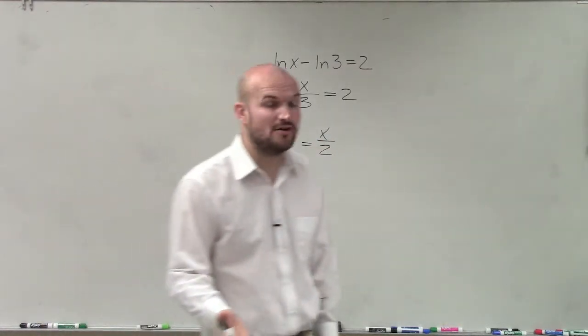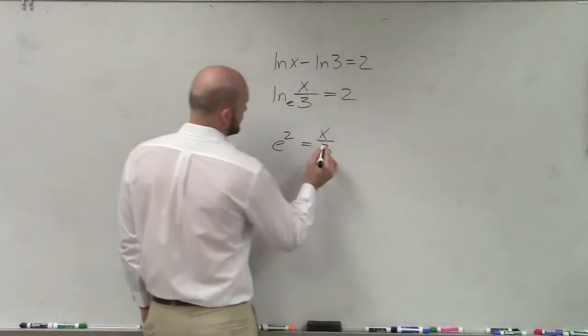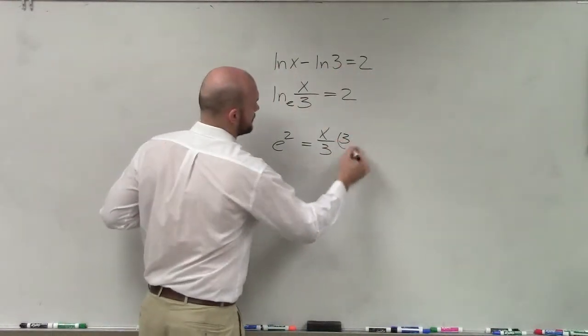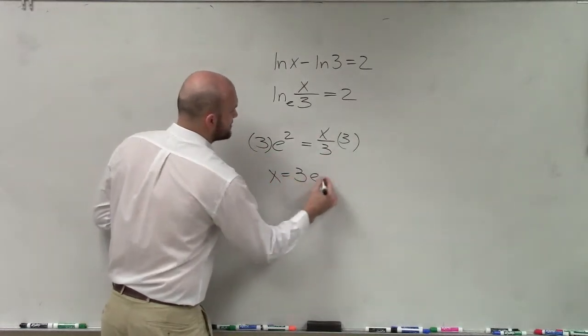Well, now it's in an equation that we can solve for. Over 3, sorry. And now, to solve for x, I just multiply by 3 on both sides. So therefore, x equals 3 times e squared.